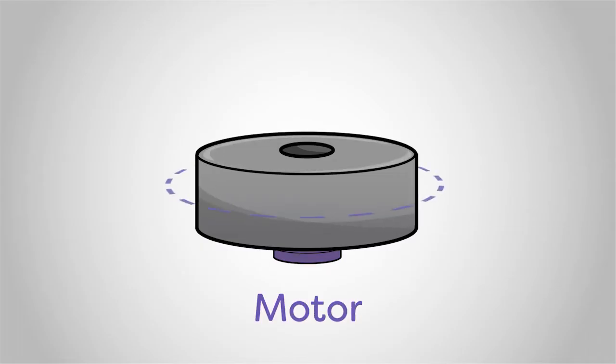The electricity drives a motor which spins a steel flywheel. Its motion stores kinetic energy.